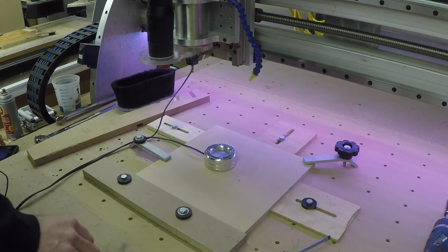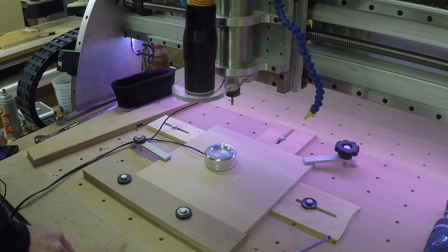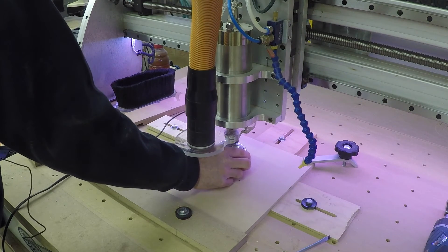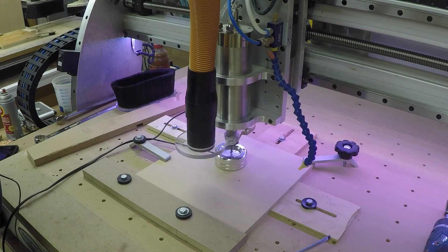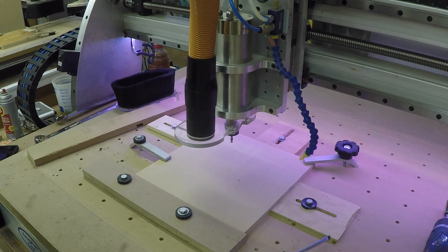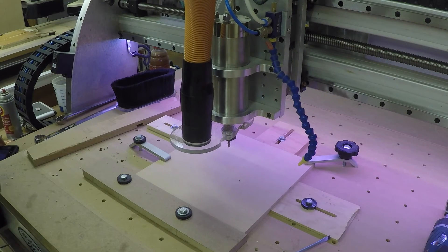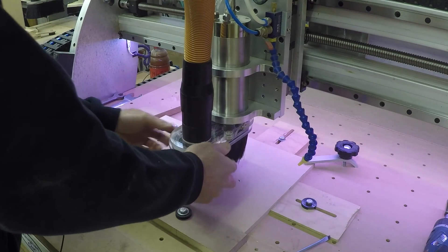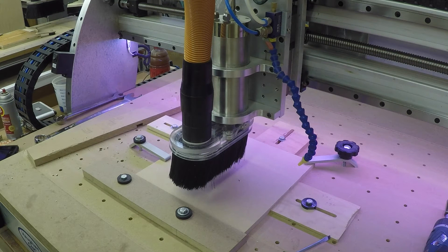All right, now we're going to zero out our bit so it knows how high we are here. So now it knows where it is. I'll zero the X and Y somewhere in the middle. About there-ish. Put on the dust shoe. And we'll try cutting this part out.